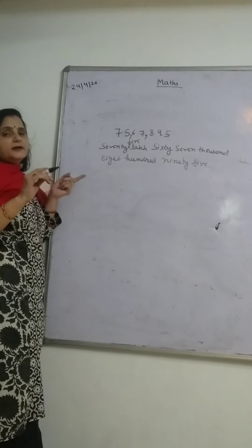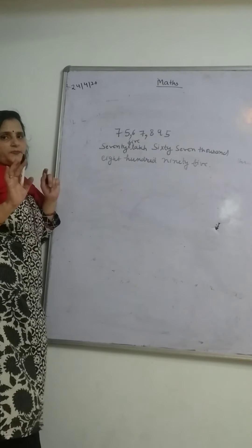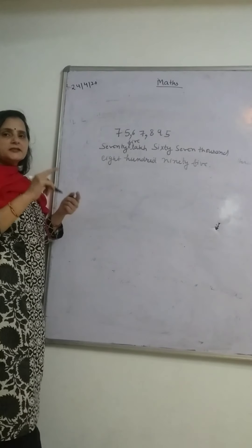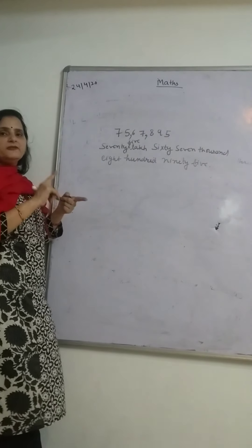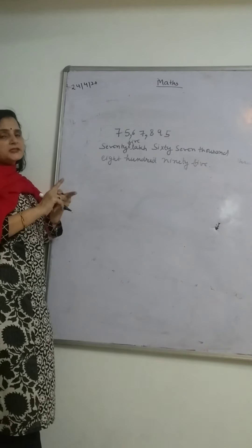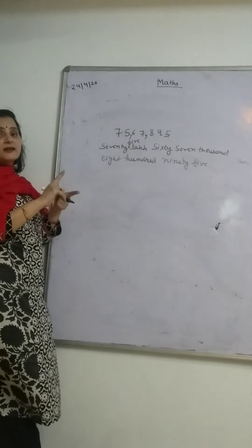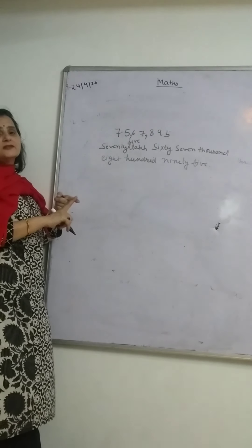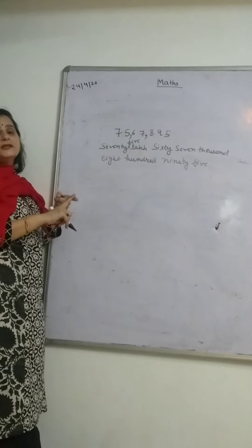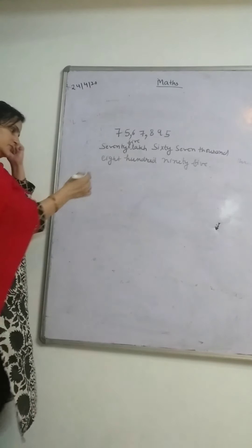We were talking about the successor and predecessor. The successor of the greatest 5-digit number is the smallest 6-digit number.